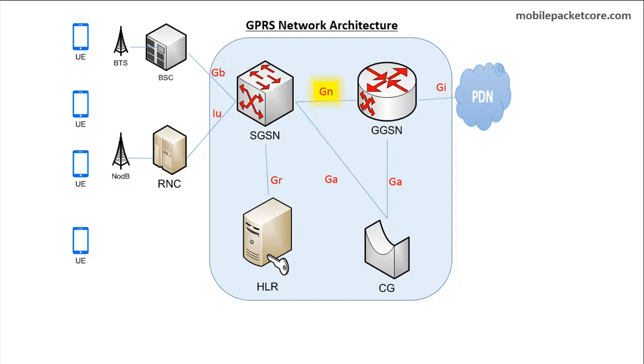The GN interface is the interface between the GSNs, which means the SGSNs and the GGSNs, that exist within the same network.